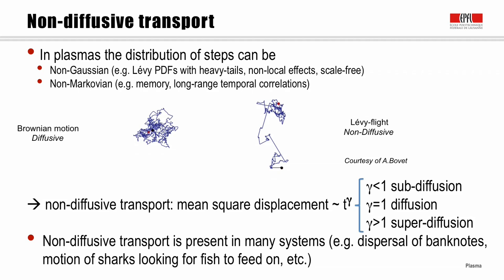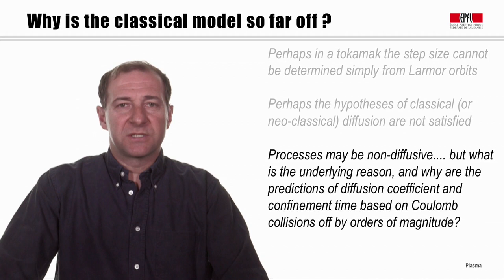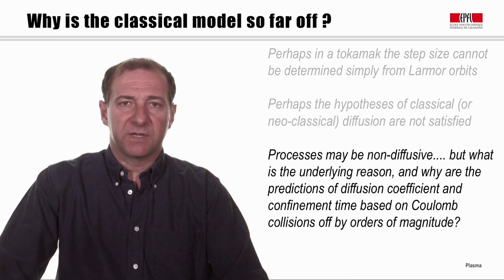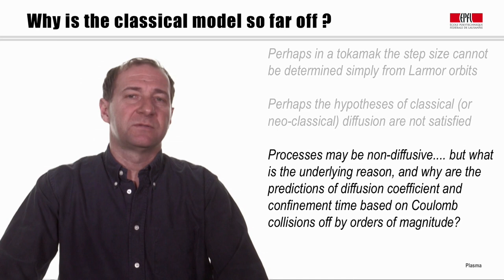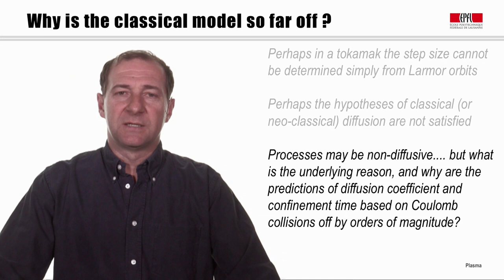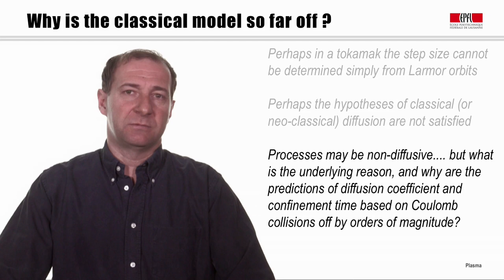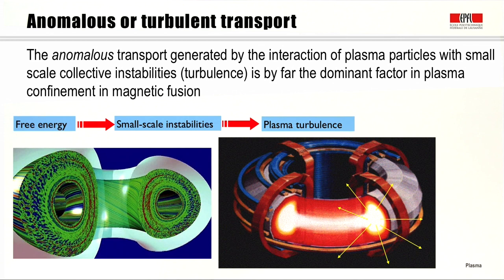So non-diffusive transport is quite common in many physical systems. However, even considering that the process may be non-diffusive, we still need to understand the underlying reason and why the predictions of diffusion coefficients and corresponding confinement times are so far off compared to experiment — orders of magnitude off. Coulomb collisions do not explain what we observe in terms of transport, and correcting or generalizing the classical approach may not help at all in explaining experimental measurements.